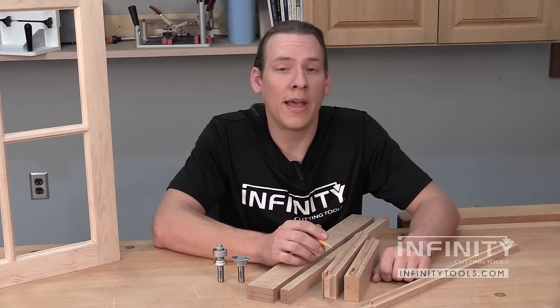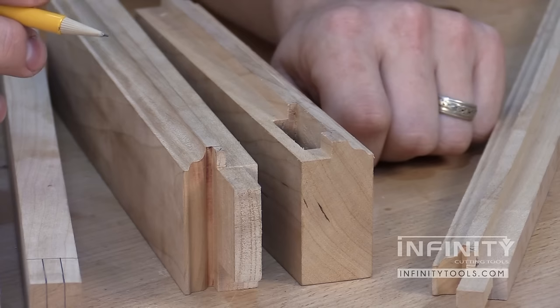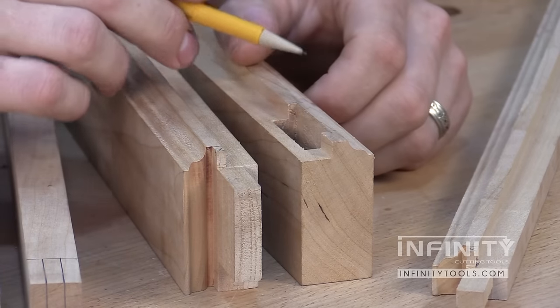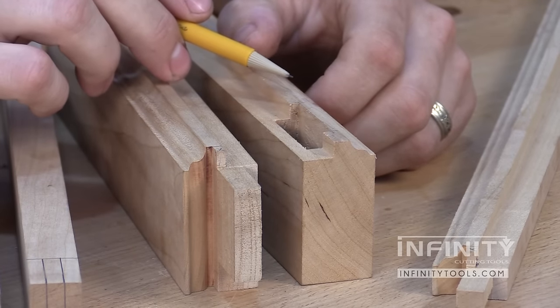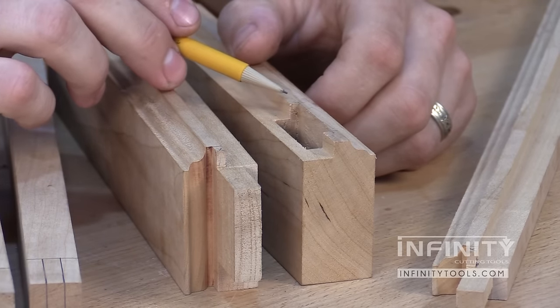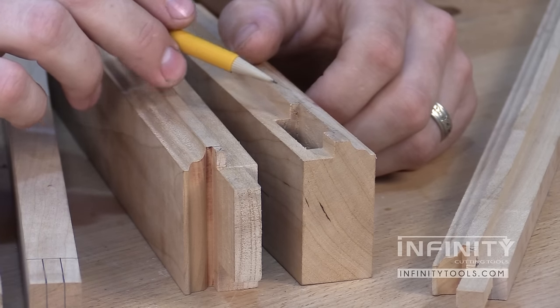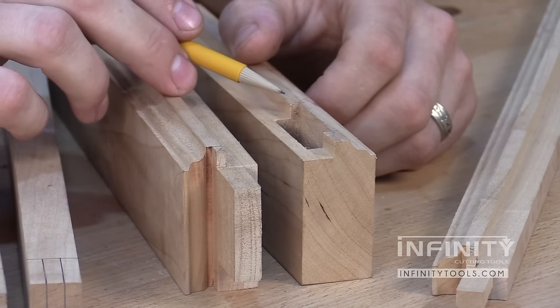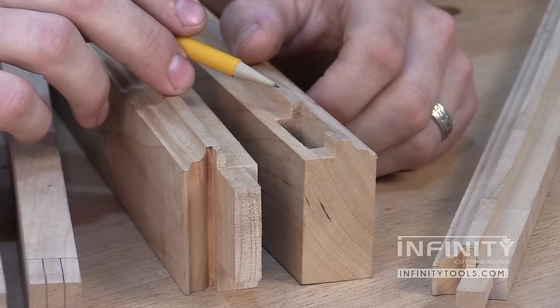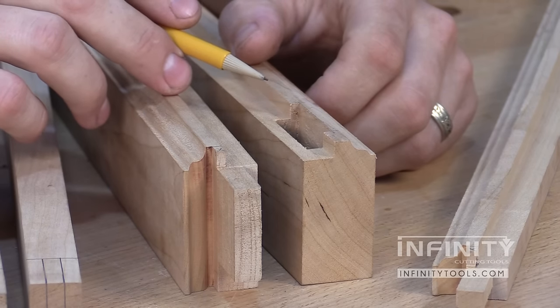In order to make our window sash thinner, we have to shrink both the profile portion of the window and the flat where the tenon is traditionally housed. Because this area shrinks, if we were to house the tenon in a traditional manner, the window would be too weak.